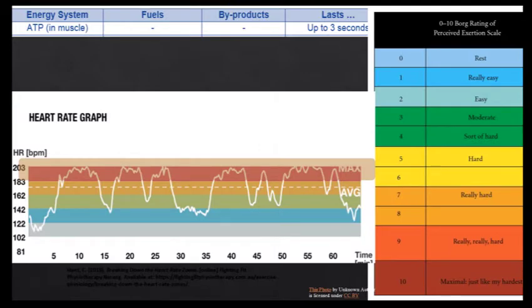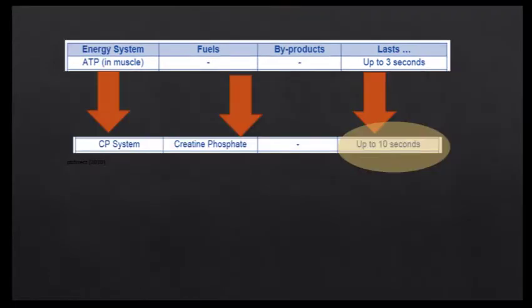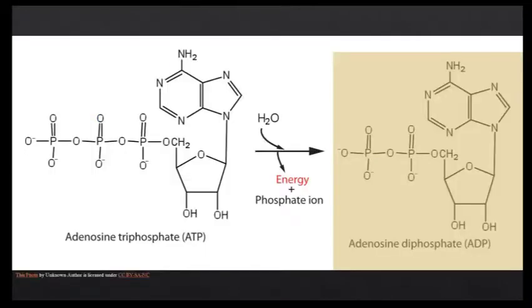However, the implication of creatine phosphate as a fuel source allows ATP resynthesis to become much more efficient, allowing for more energy production but only for up to 10 seconds. In total, the ATP-CP energy system is dominant for up to 10-15 seconds.